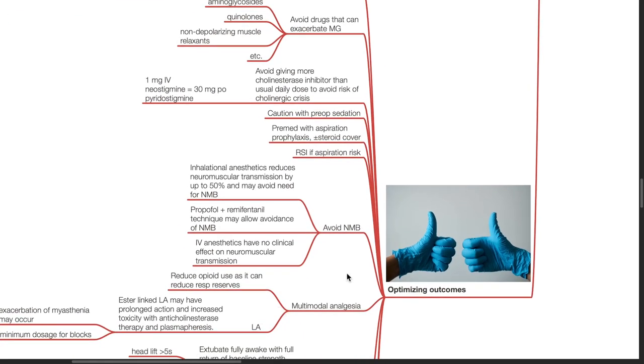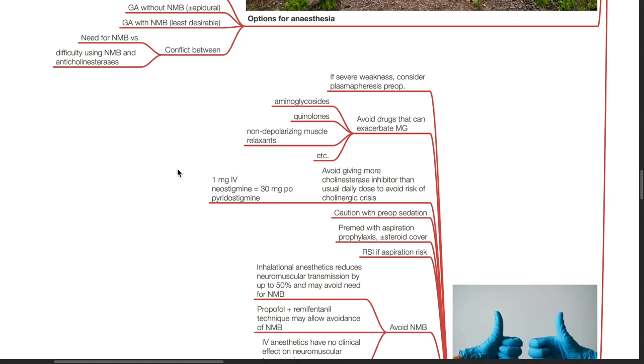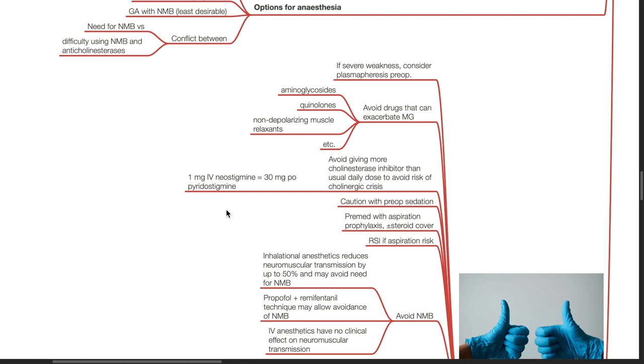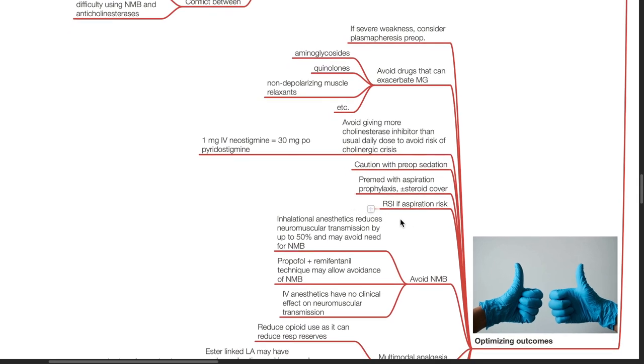Optimizing outcomes. If severe weakness, consider plasmapheresis preoperatively. Avoid drugs that can exacerbate myasthenia gravis such as aminoglycosides, quinolones, and non-depolarizing muscle relaxants. Avoid giving more cholinesterase inhibitor than usual daily dose to avoid risk of cholinergic crisis. 1 mg of IV neostigmine equals 30 mg oral pyridostigmine. Be cautious with premedication. Premedication with aspiration prophylaxis with or without steroid cover. Rapid sequence induction if there is aspiration risk.